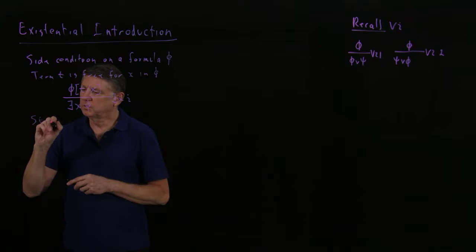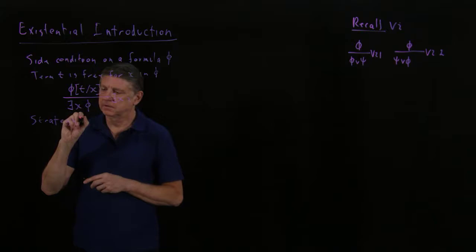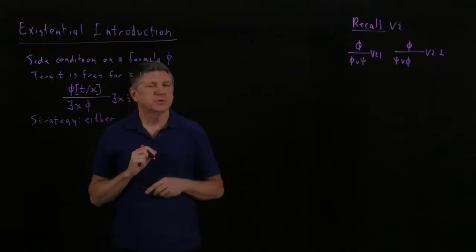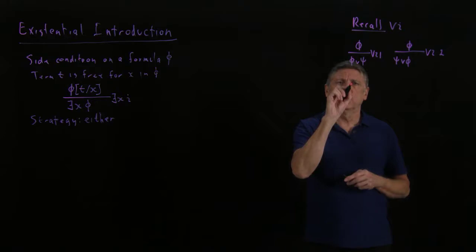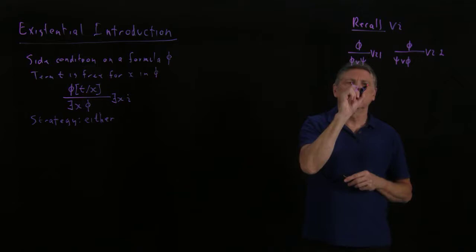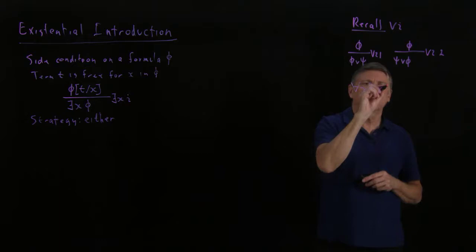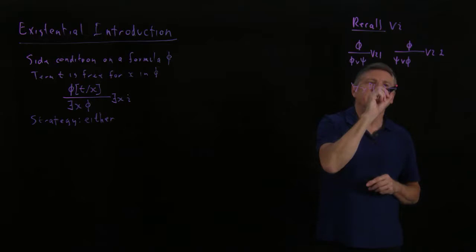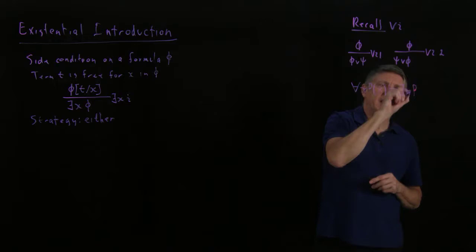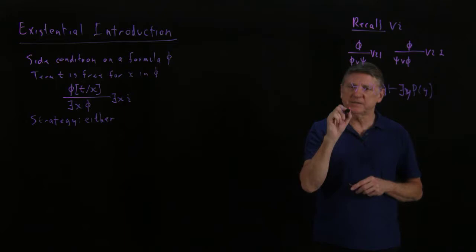So the strategy can be either forward or backward. So let's take a simple example. Suppose that what we want to do is say everything in the universe has a property, therefore, and now I'm going to change variables for clarity, therefore something in the universe has that property.